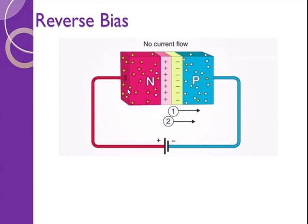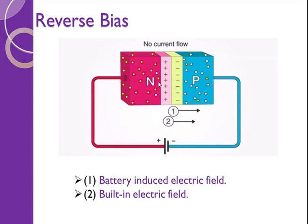We know that positive and positive repel each other, and negative and positive attract each other. So the electron is attracted by the positive terminal and the hole is attracted by the negative terminal. In forward biasing, the depletion layer becomes very small and current flows easily. In reverse biasing, the positive terminal is connected to the N-type semiconductor and the negative terminal is connected to the P-type semiconductor — this type of biasing is called reverse biasing.